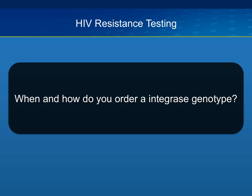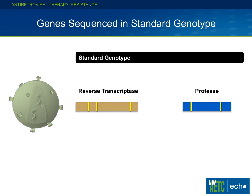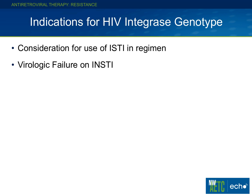When should you order an integrase genotype? To clarify, an integrase genotype is not part of your standard genotype when you order it from commercial assays — unfortunately, though it's easy to add and I personally think it should be included. Your current standard assay gives you analysis of the reverse transcriptase and protease only, covering NRTIs and NNRTIs, but not integrase. If you're thinking about using an integrase inhibitor upfront and it's possible the person was exposed to a transmitted resistant integrase strain, it would be reasonable to order it in that setting.